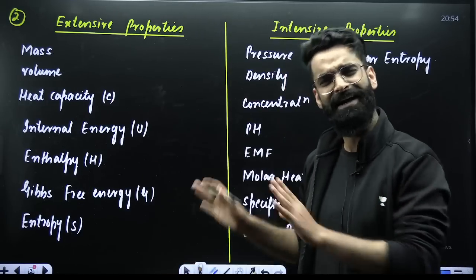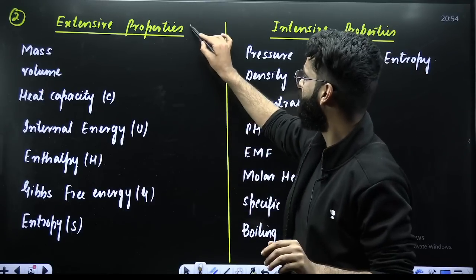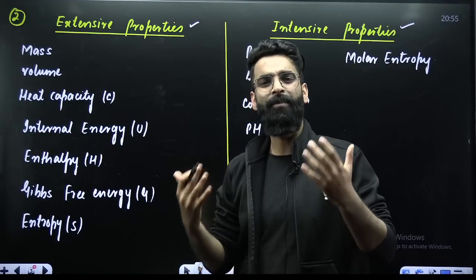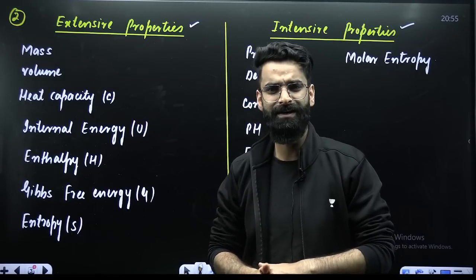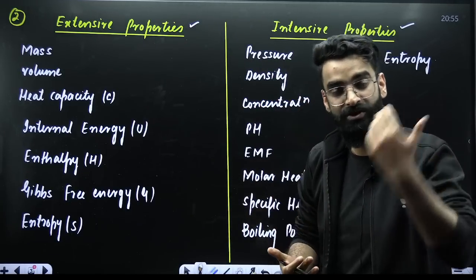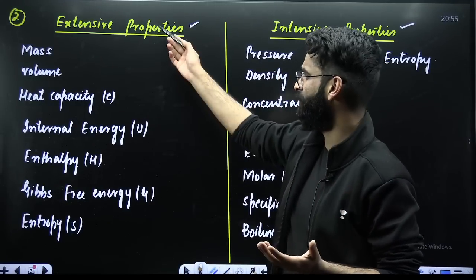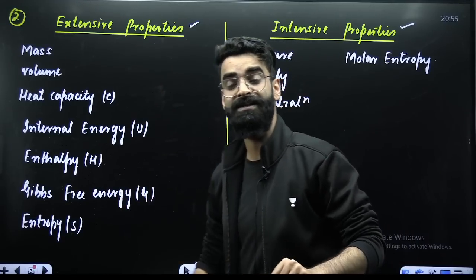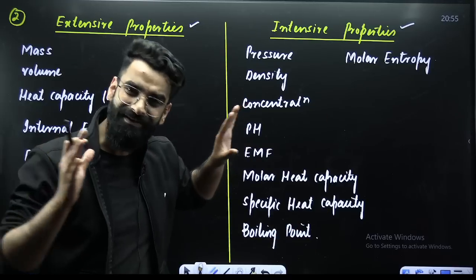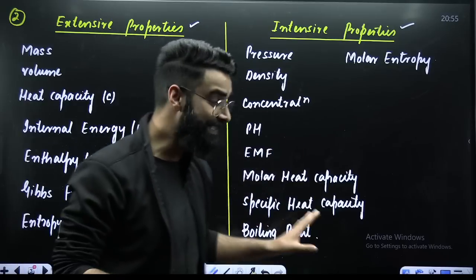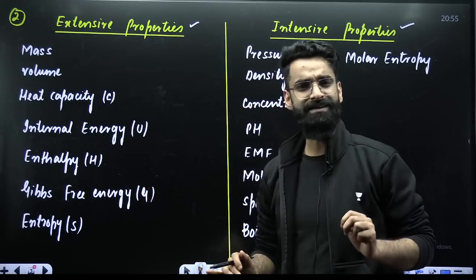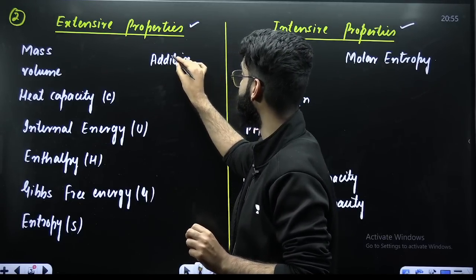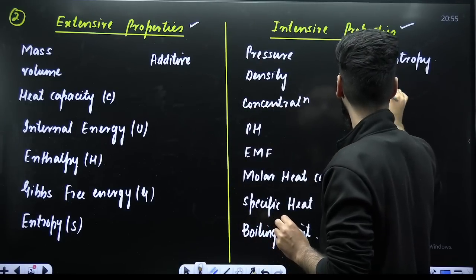Concept number two, which is frequently asked — expect one question from this particular chart as well. All of you would have come across extensive and intensive properties. Extensive properties are the ones which actually depend upon the size of the system or the amount of substance present in the system. Those properties whose value changes on changing the size or amount of substance are called extensive; otherwise it's going to be intensive. You just have to remember these examples of extensive and intensive properties directly — they are directly asked in the exam. Remember: extensive properties are additive in nature; you can add or subtract them directly. Intensive properties are non-additive in nature.